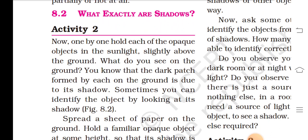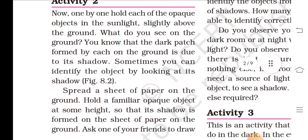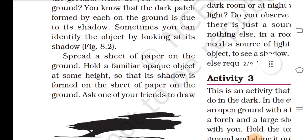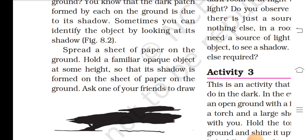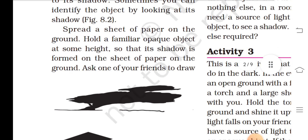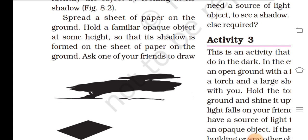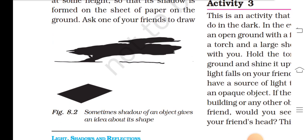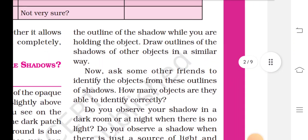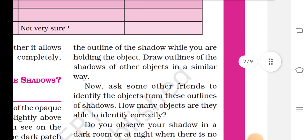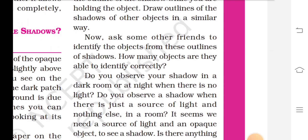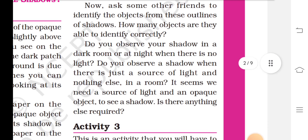What exactly are shadows? Now, one by one hold each of these objects in the sunlight, slightly above the ground. What do you see on the ground? You know that the dark patterns formed by each on the ground is due to its shadow. Sometimes you can identify the object by looking at its shadow. Spread a sheet of paper on the ground. Hold a familiar object at some height so that its shadow is formed on the sheet of paper on the ground. Ask one of your friends to draw the outline of the shadow while you are holding the object.